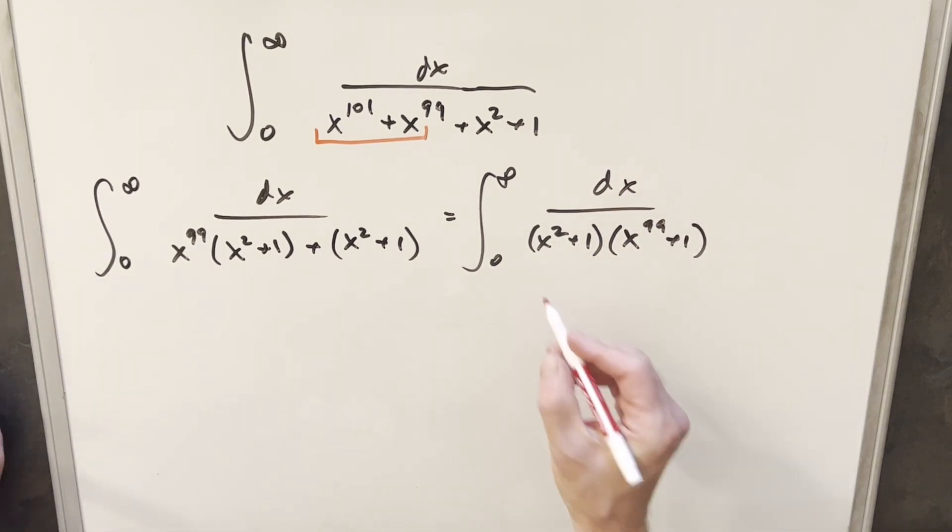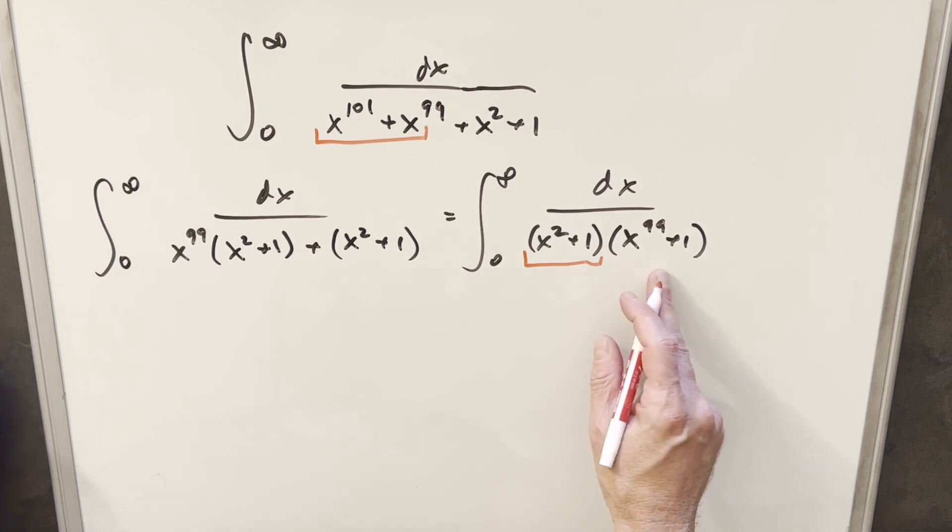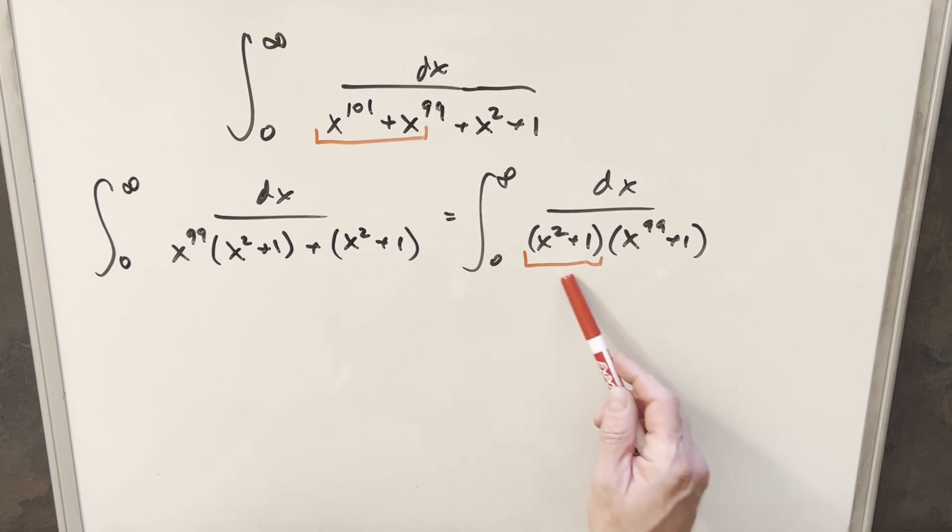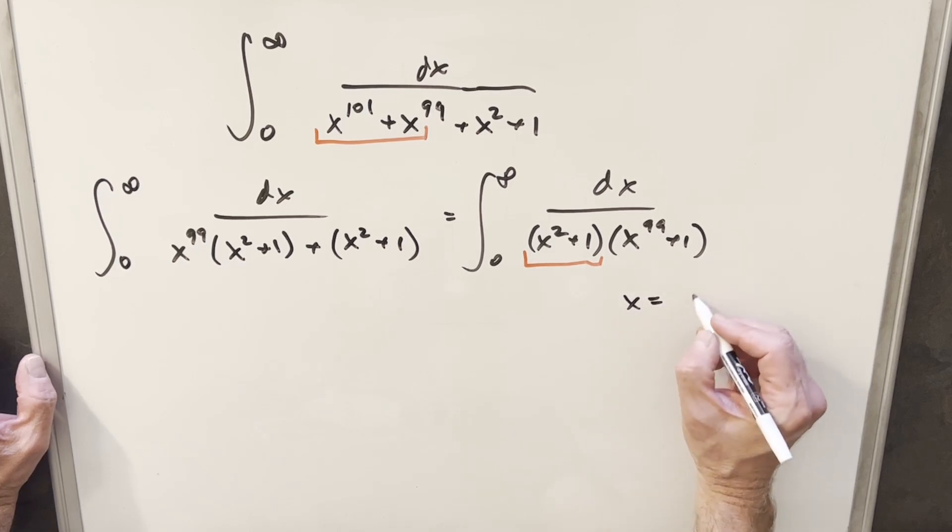And then you may notice that this kind of indicates that we could do a trig sub, even though this is kind of unfamiliar. This is not like our typical looking trig sub. But I'm going to go with this and do the trig sub anyway. So if I make, in this case, what we'll do for a trig sub is we'll say x equals tan of t.